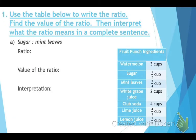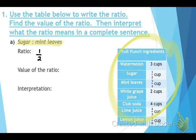Use the table below to write the ratio, find the value of the ratio, and then interpret what that ratio means in a complete sentence. We are comparing sugar to mint leaves. Looking at the fruit punch ingredients, we need one-half cup of sugar.